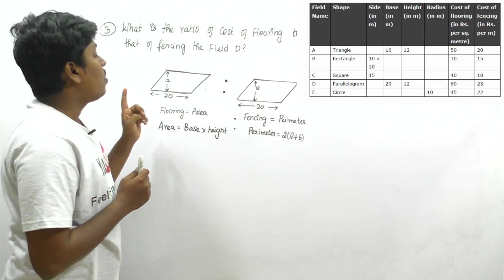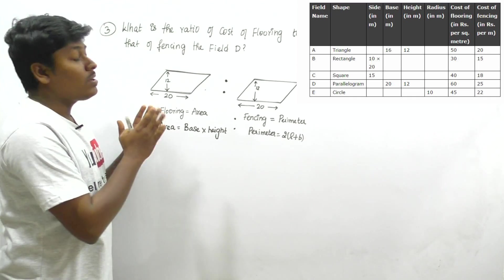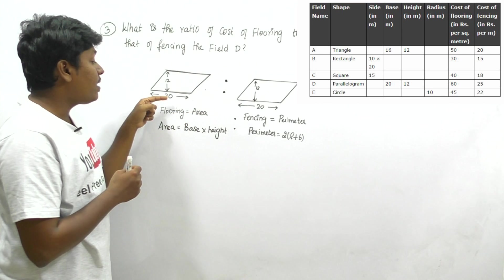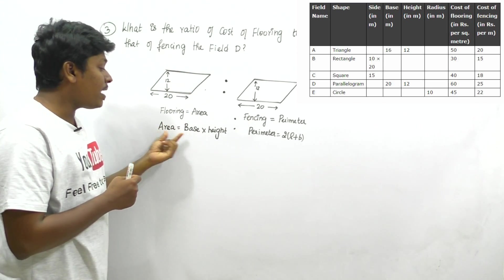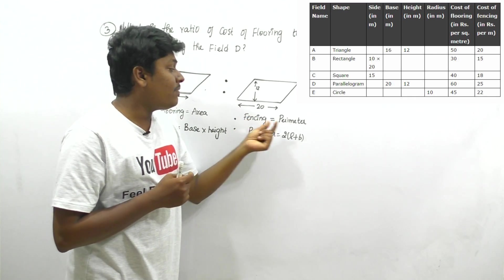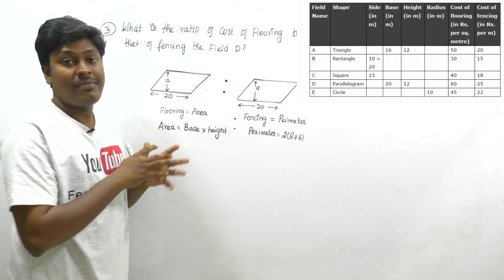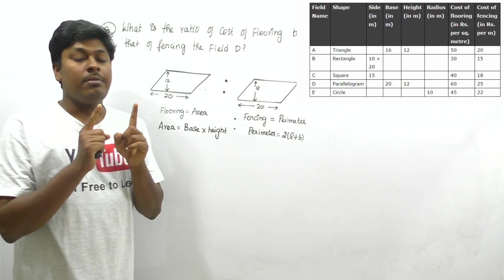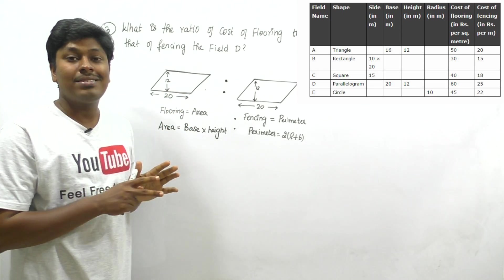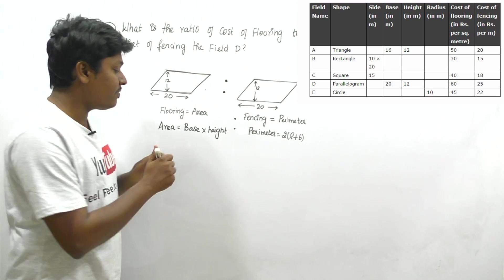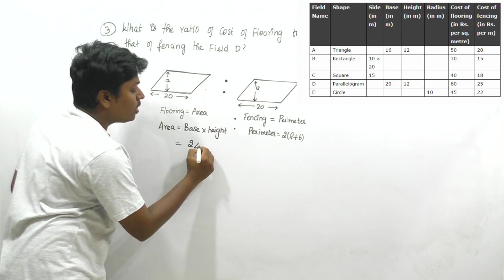The third question asks for the ratio of cost of flooring to cost of fencing for field D, which is a parallelogram with base = 20 and height = 12. For flooring we find area = base × height. For fencing we find perimeter = 2 × (length + breadth). Remember: in ratio problems, don't waste time multiplying values prematurely — keep them as-is for cancellation.